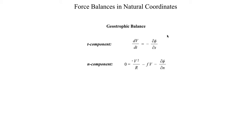Let's start with the very first balance we looked at in this class: the geostrophic balance. The fundamental definition of geostrophic balance is for a perfectly straight flow pattern — it is a balance between the pressure gradient force and the Coriolis force. Since that is a force balance, the air parcel moves at constant speed without changing its forward direction. A perfectly straight flow pattern means the radius of curvature goes to infinity.